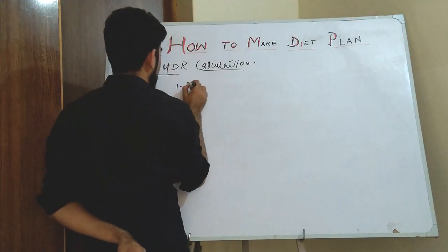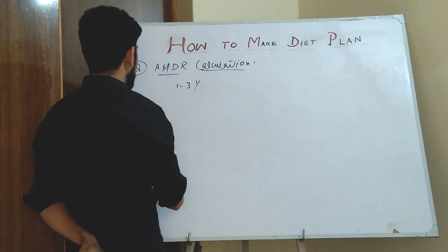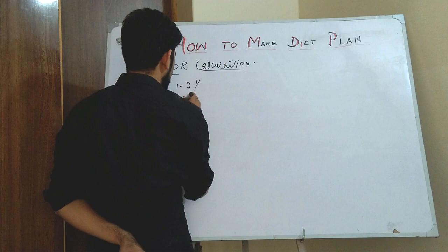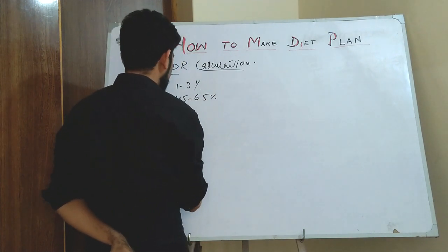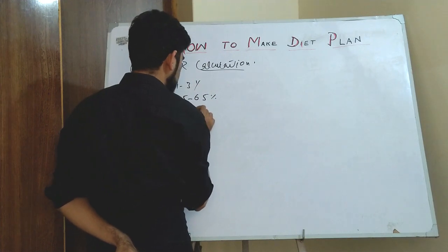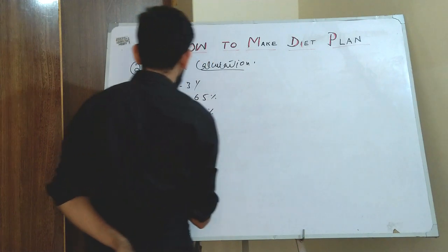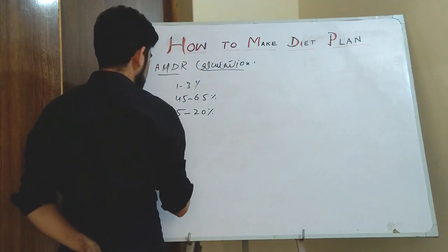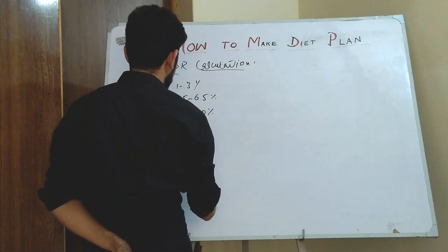For children one to three years, the AMDR for carbohydrate is 45 to 65 percent, for protein it is 5 to 20 percent, and for fat it is 30 to 40 percent.